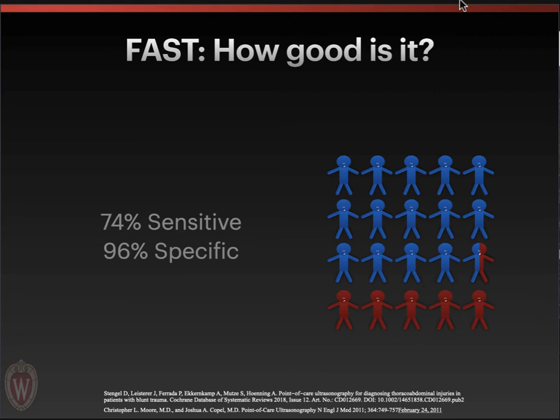The question is always how good is it? The FAST exam is only 74% sensitive, which means you're going to miss about a quarter of the people who have free fluid on their abdominal exam. If you see free fluid on their abdominal exam, they are almost certain to actually have it, putting this at 96% to sometimes 99% specificity, depending on which review you look at.